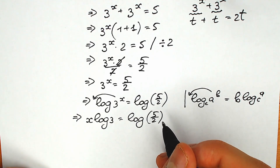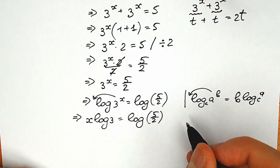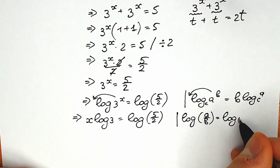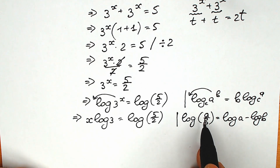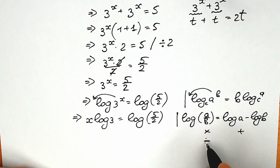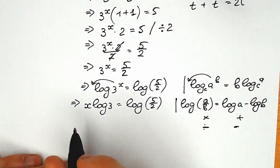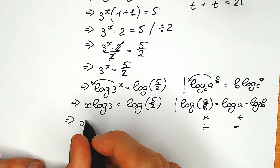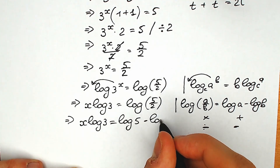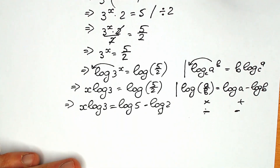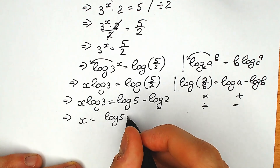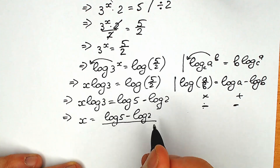Right now, a really important property — you can easily learn this. Whenever we have a fraction, log of a over b, we can write it as log a minus log b. Multiplication corresponds to addition, and division corresponds to subtraction. Let's apply this here. So we have x log 3 equal to log 5 minus log 2. And the final tricky move: let's divide both sides by log 3.